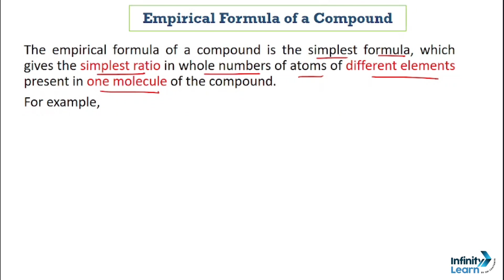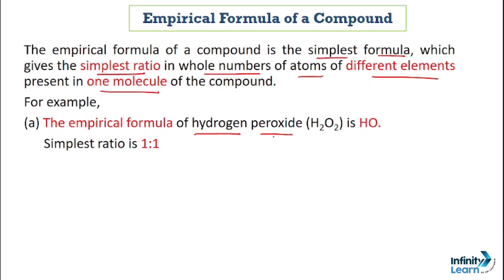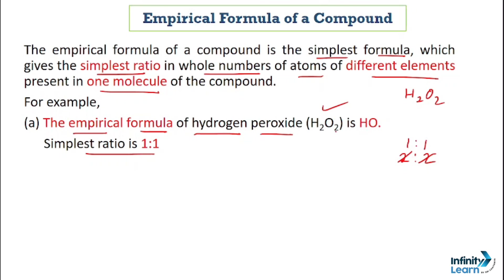Our first example is hydrogen peroxide. The formula of hydrogen peroxide is H₂O₂. The empirical formula is found by determining the simplest ratio. Here both hydrogen and oxygen have a value of 2. So if we simplify this further by dividing, we get a ratio of 1:1, which means the empirical formula of hydrogen peroxide is HO.